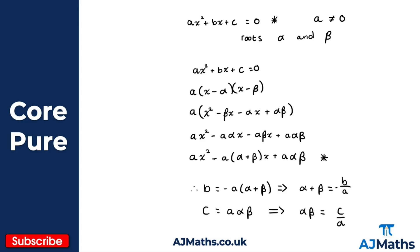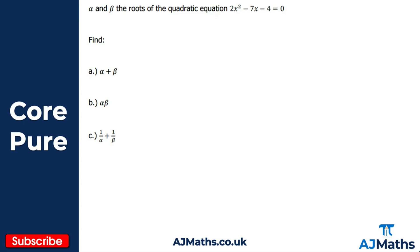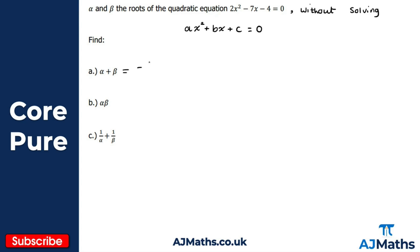Let's take a look at one quick example. Alpha and beta are the roots of this quadratic equation, and without solving we want to find three things. For part a, we want alpha plus beta — the sum of the roots. Remember, if you can't recall the expression, you can derive it starting from ax squared plus bx plus c equals zero. Here a is positive two, b is minus seven, and c is minus four.